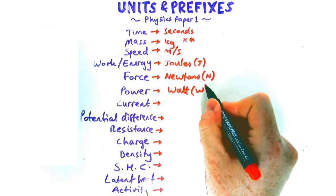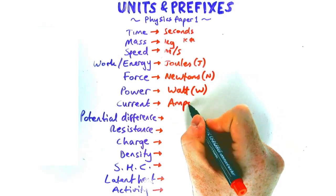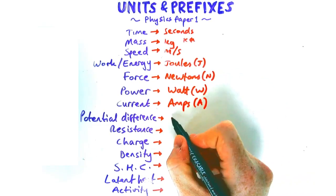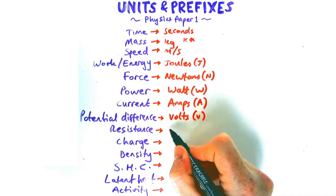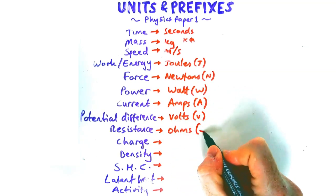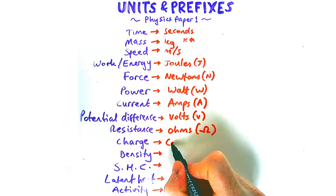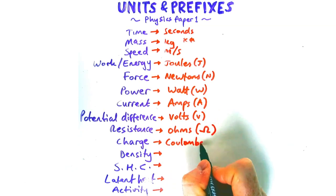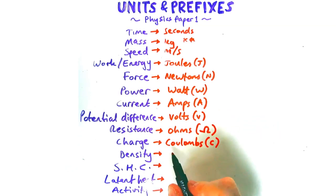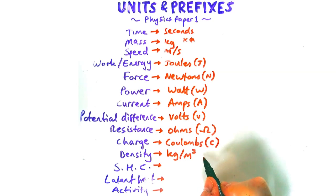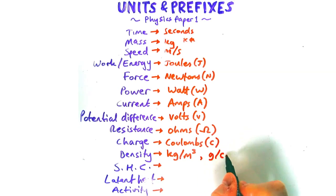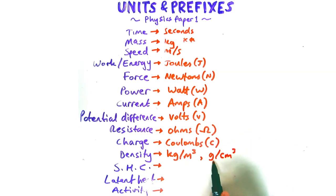Current is measured in amps or amperes — amps is almost always absolutely fine. Potential difference or voltage is measured in volts. Resistance is measured in ohms, or the symbol is that omega shape. Charge is measured in coulombs. Don't get these electrical ones mixed up because it's easy to do that. Density is measured in kg per meter cubed, but it could also be in grams per centimeter cubed — just be aware of what the question is asking for.